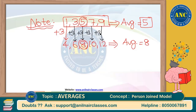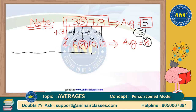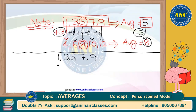If I increase each number by 3, my average also will increase by 3 from the original average. Earlier the average was 5; now it is increased by 3, so 5 plus 3 becomes the new average of 8. This applies not only to addition but also to subtraction or multiplication.